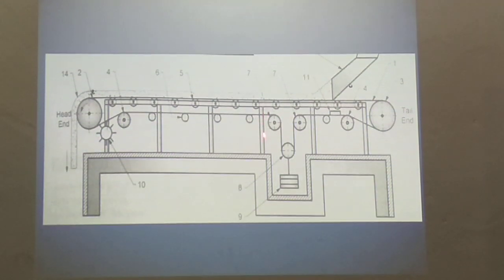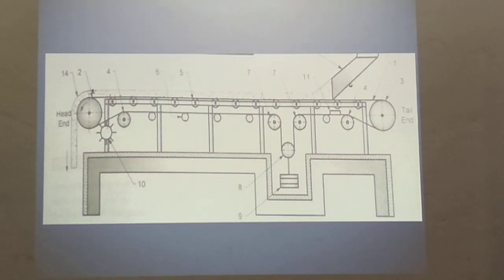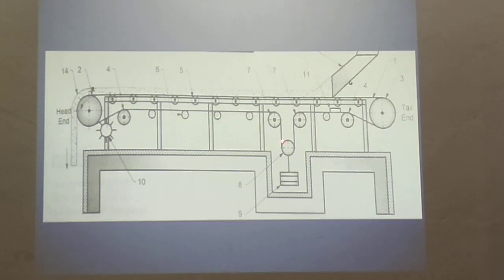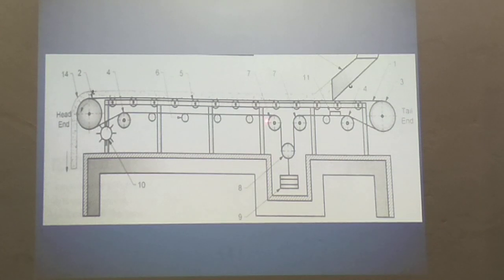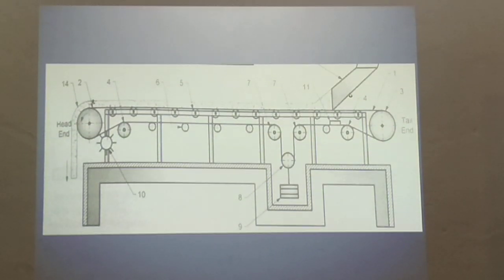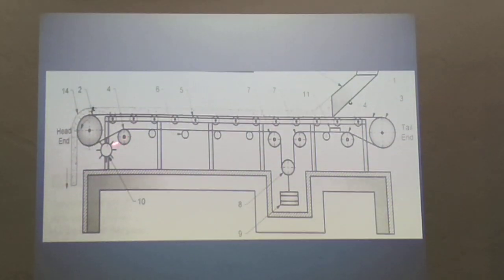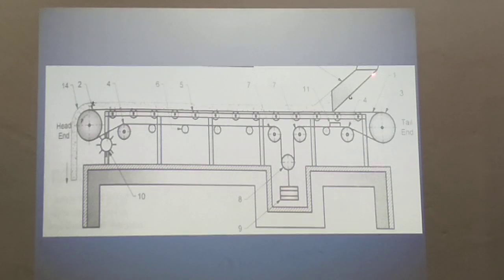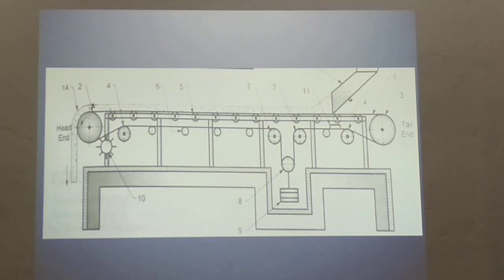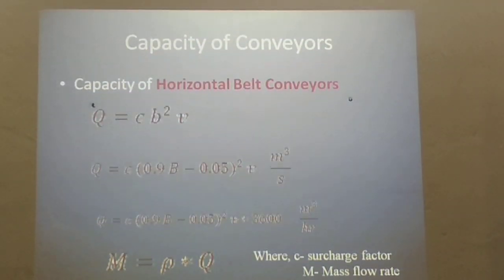Next, as you can see in the figure, this is the belt tensioning device. Its basic function is to maintain the tension in the belt. The various components are: belt pulleys, a take-up pulley, and a counterweight. This is known as a vertical take-up device. This belt tensioning device is used to maintain tension in the belt. Another belt tensioning device is also used to clean the belt material. Next, this is the belt hopper — with the help of this hopper we supply material to the belt system.